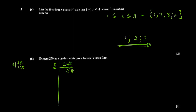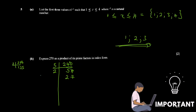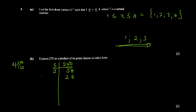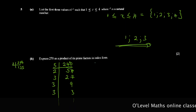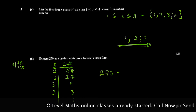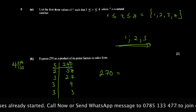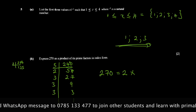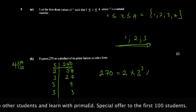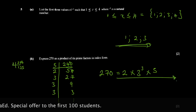Now 54 ends in an even digit, so 2 is a factor. Two into 54 gives 27. Now 27: you should know from multiplication tables that 3 is a factor. Three into 27 gives 9. Three into 9 gives 3. Three into 3 gives 1. So the prime factors are 5, 2, 3, 3, and 3.